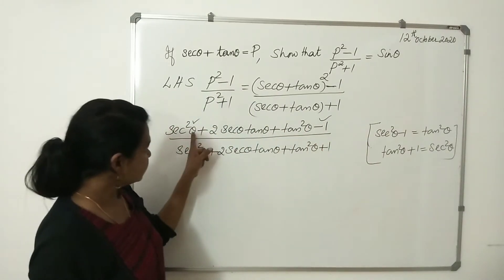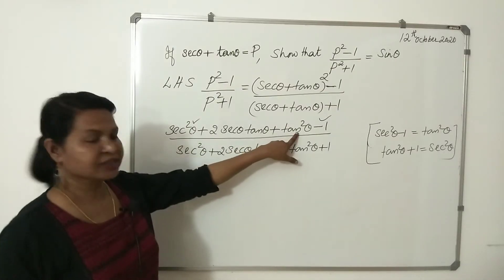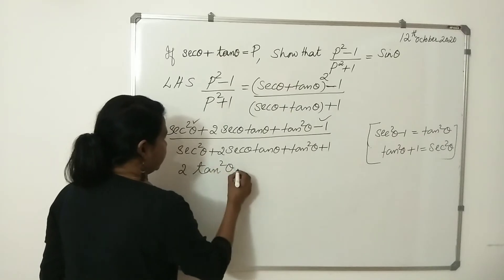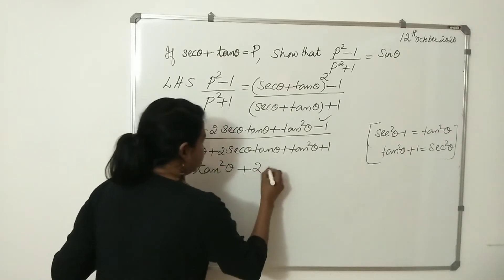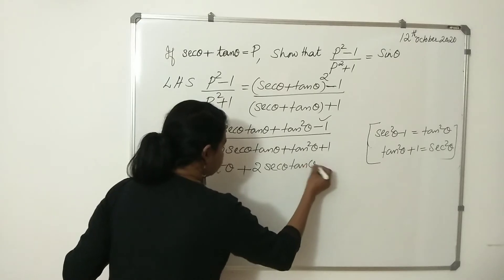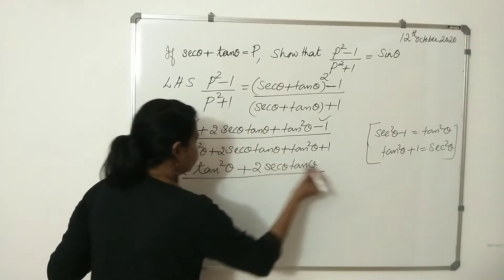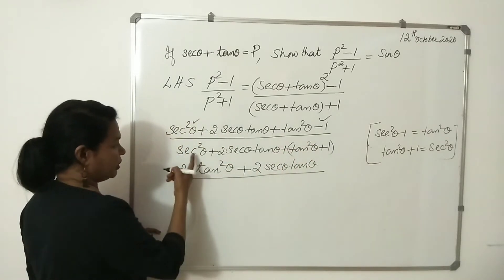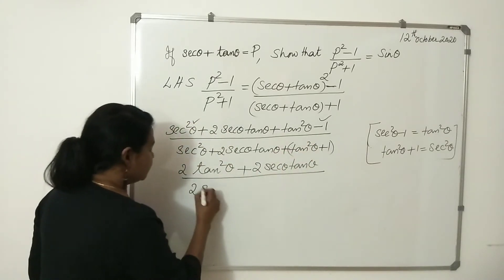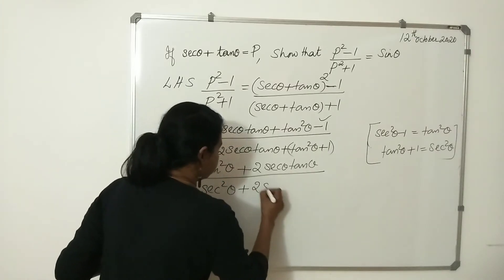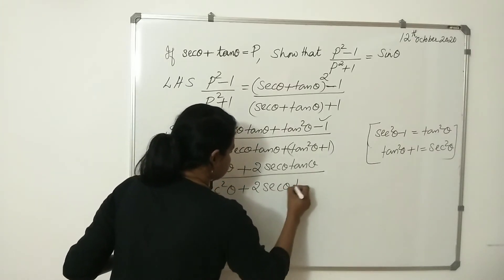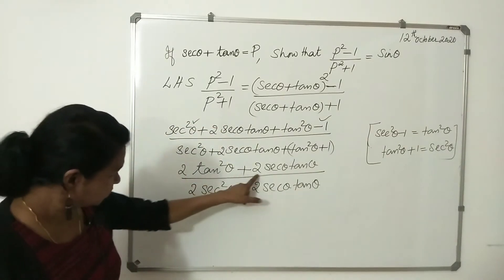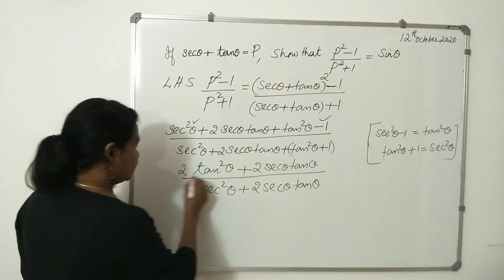So in the numerator, sec²θ - 1 becomes tan²θ, and tan²θ + tan²θ gives 2tan²θ, plus 2secθ·tanθ. In the denominator, tan²θ + 1 becomes sec²θ, giving 2sec²θ plus 2secθ·tanθ. Taking 2tanθ common in the numerator: